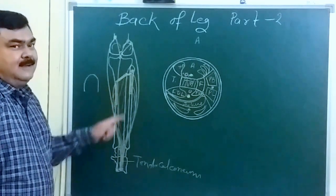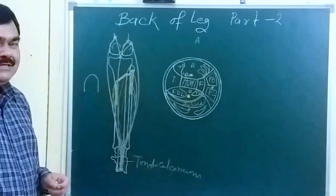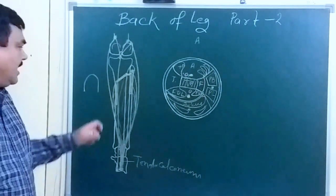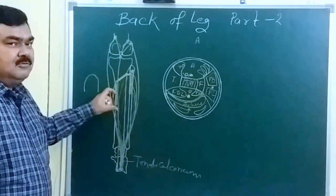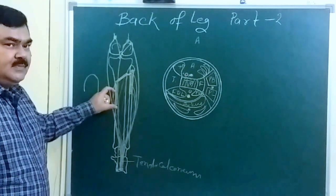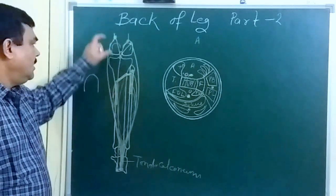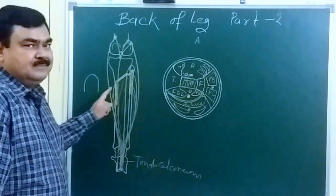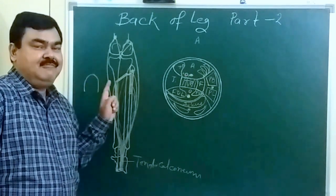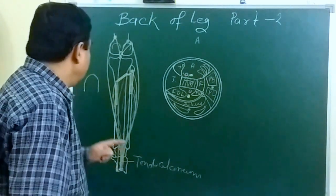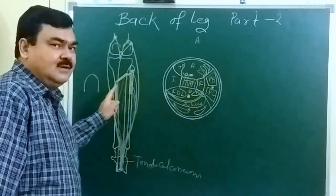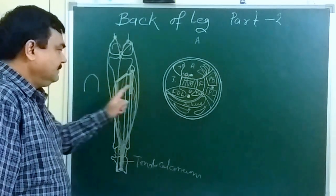The soleus muscle is known as the peripheral heart. By contraction of this muscle, venous blood reaches from the lower limb upward, so it helps in circulation — hence it is also known as the peripheral heart. The nerve supply of these superficial muscles is the tibial nerve.